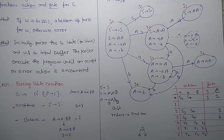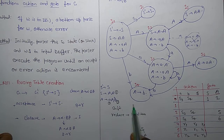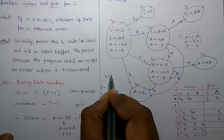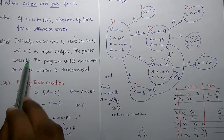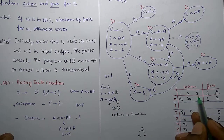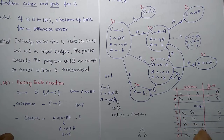In the continuation of the previous lecture where the parse table was created for LR(0), if there is a string ended with dollar, all strings end with dollar. So on one state, if dollar is read, then it will go to the accept state. This is the complete parsing table.